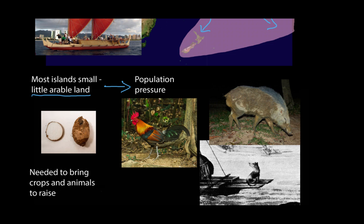To deal with the fact that the islands didn't provide a lot of natural food, people would bring their own food supplies. They'd bring crops like sweet potatoes, yams, and taro root, and they'd bring animals as well — chickens (the Southeast Asian red jungle fowl being the precursor to domestic chickens), pigs, and a small breed of dog. They would grow the crops and raise the animals as a food source on the new islands.